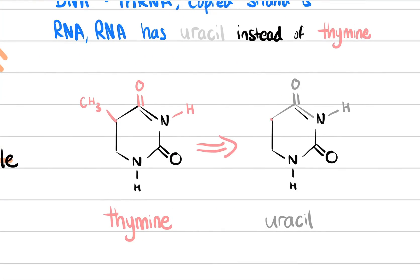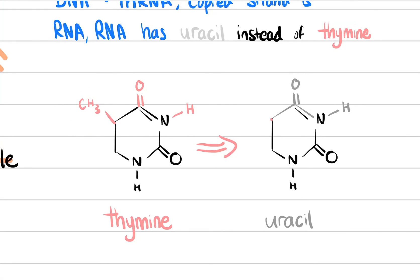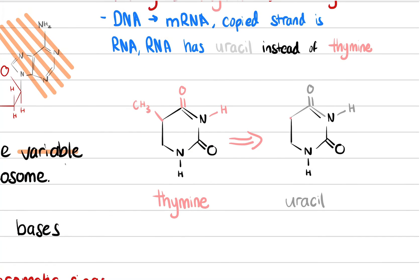The chemical difference between thymine and uracil is just the replacement of a methyl group — that's the only difference. Remove that methyl group and we have a uracil. These small differences can cause mutations in our bodies, and our bodies have to check during replication if these small mistakes are made. That's why it's easy to have a mutation sometimes, and our bodies have many mechanisms to recognize that as well.